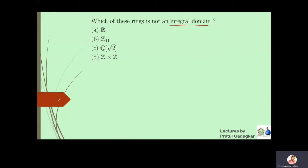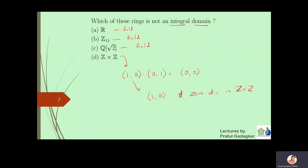The next question asks which of the following rings is not an integral domain. The reals form a field, so they are obviously an integral domain. Z11 is also a field, and Q(√2) is also a field. However, Z×Z is not an integral domain because (1,0) times (0,1) gives (0,0), meaning (1,0) is a zero divisor in Z×Z. So Z×Z is not an integral domain — the answer is option D.